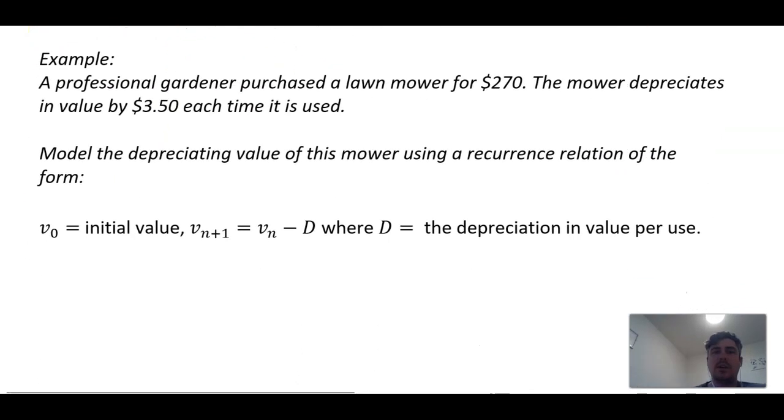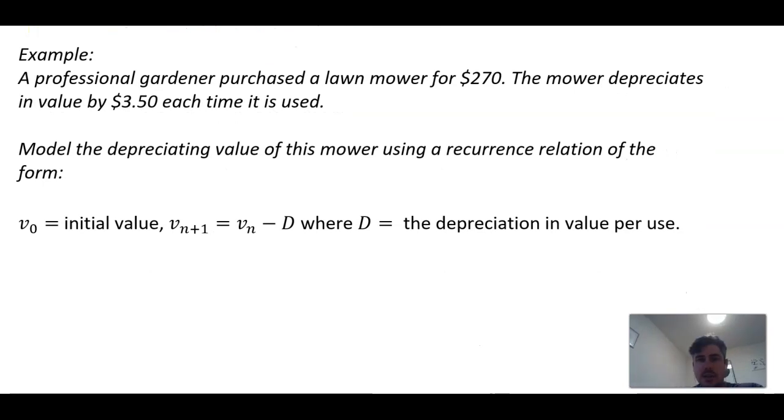The next question asks: a professional gardener purchases a lawnmower for $270, and it loses $3.50 each time it is used. Model the depreciating value of the mower. If we look at the recurrence relation model of V_n+1 equals V_n minus D, where D is the common difference, it's pretty straightforward. V_0 is the initial value, $270, and V_n+1 equals V_n minus 3.5.